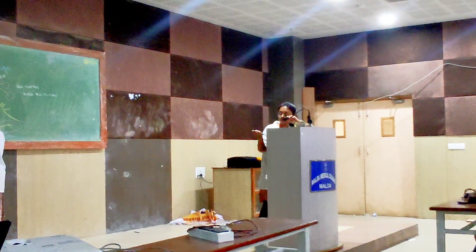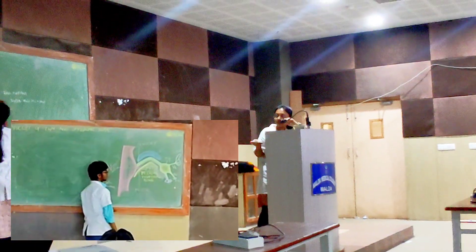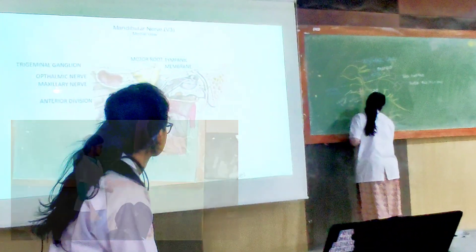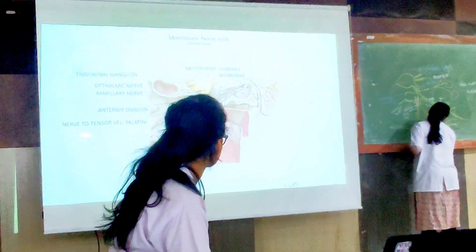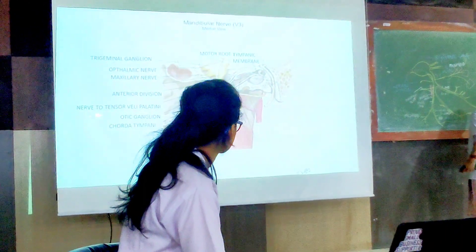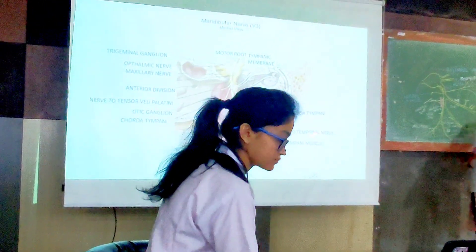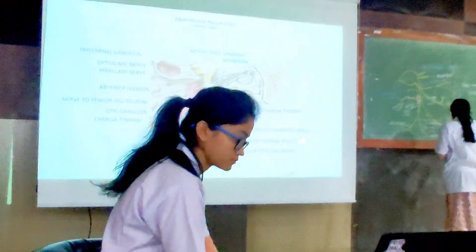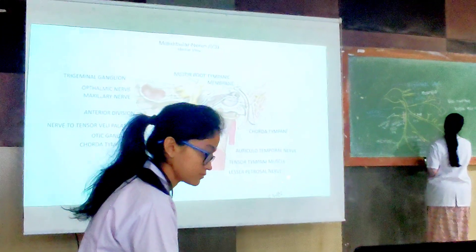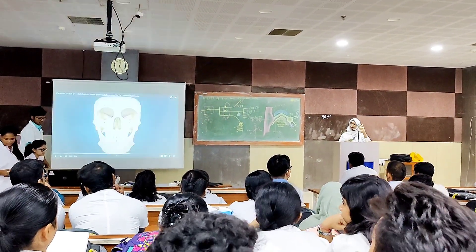We see the trigeminal ganglion giving rise to: the ophthalmic nerve — first division; the maxillary nerve — second division; and the mandibular nerve — third division, which supplies the tympanic membrane. The anterior division of the mandibular nerve, the nerve to tensor veli palatini from the trunk, the otic ganglion, the chorda tympani, the auriculotemporal nerve from the posterior division, the tensor tympani muscle supplied by the trunk, the lesser petrosal nerve. For you all, we have a 3D representation of the mandibular nerve with its branches. Please try to follow — this is the mandibular nerve shown here.